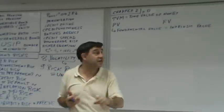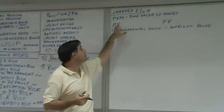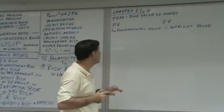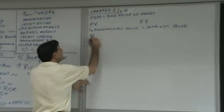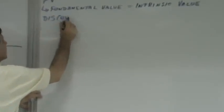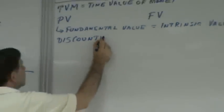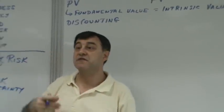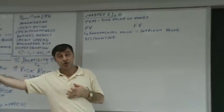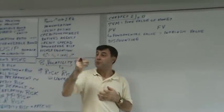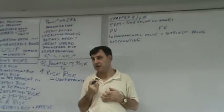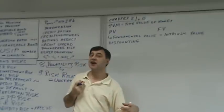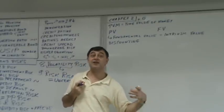The conversion of future values to present values is called discounting. Discounting is the process of converting future values to present values. The process of converting present values to future values is called compounding.